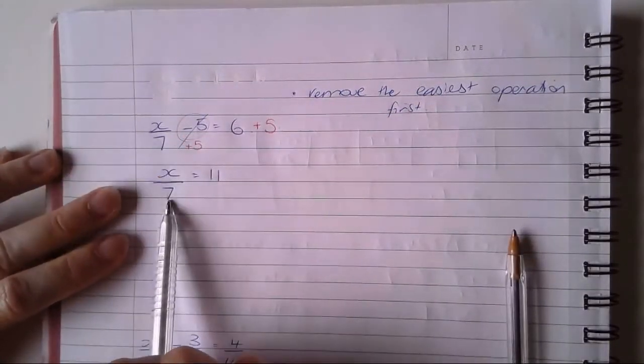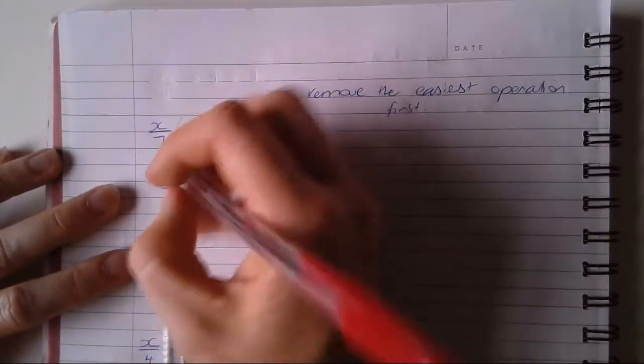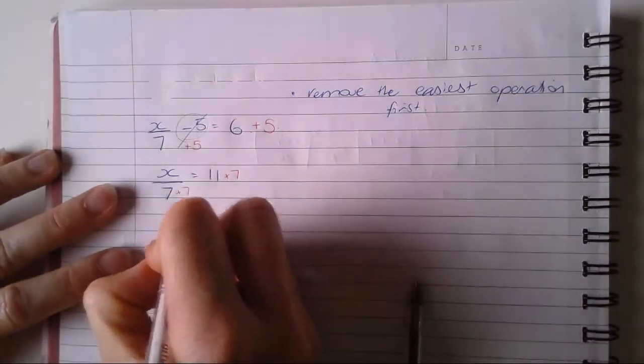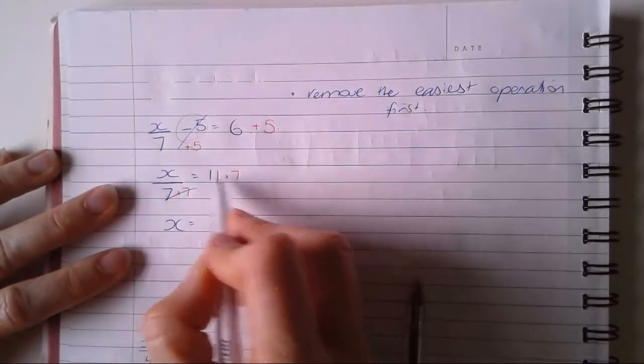Now I have a divide by seven, so the inverse of that is times by seven on both sides. And I have x equals 77.